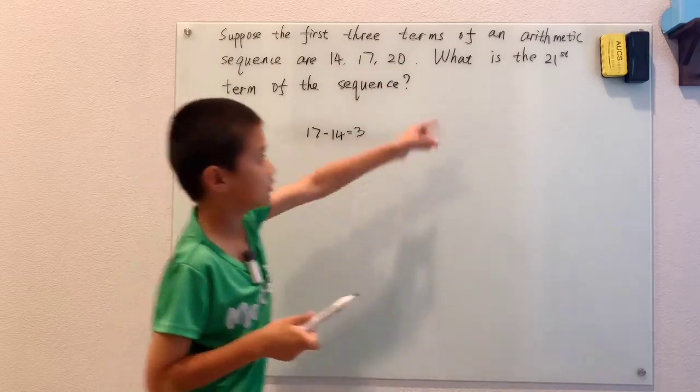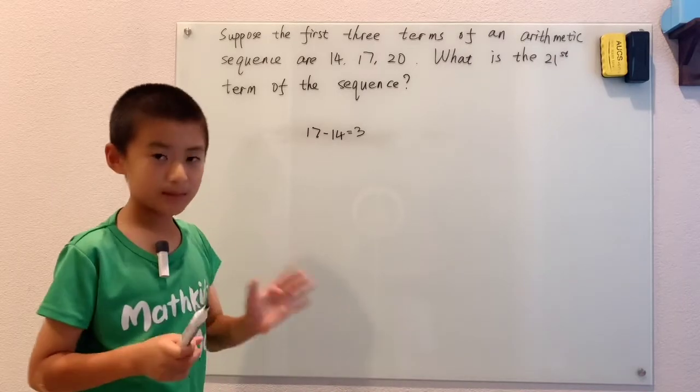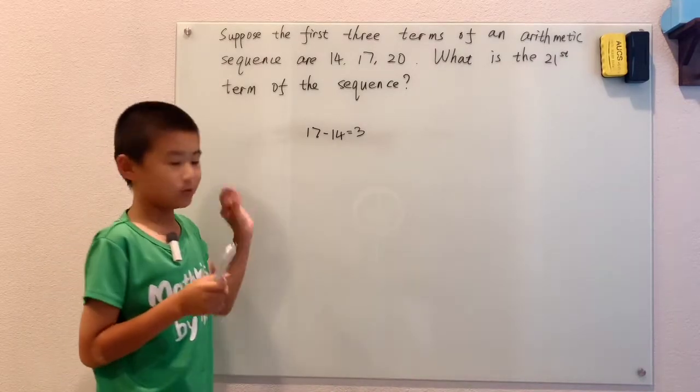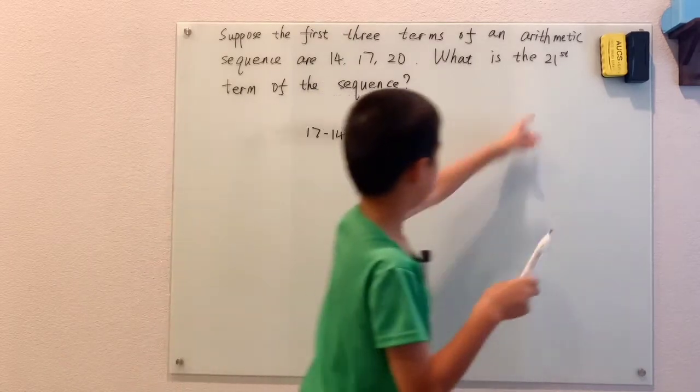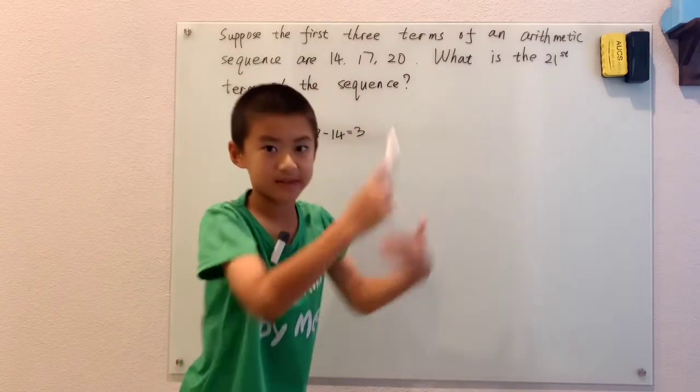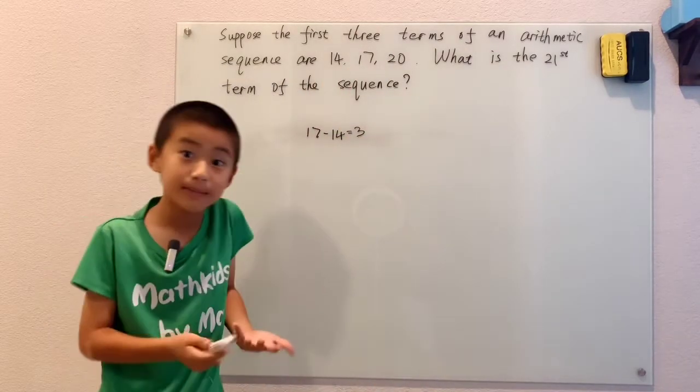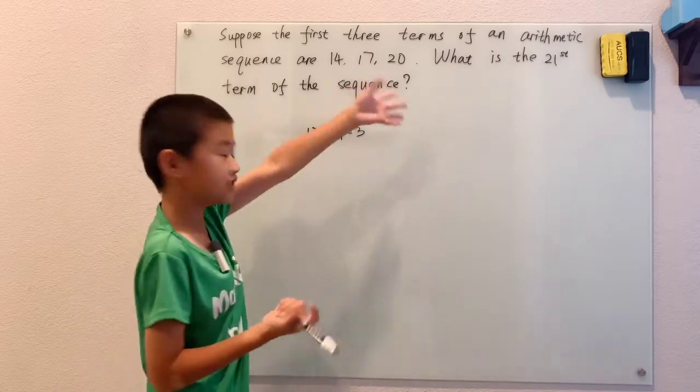So it looks like the 21st term, you would take 20 steps. Now remember, you've got to be careful. Don't be lazy. You still have to figure this out. Now you can't just say that, okay, you want the 21st term, so you take 21 steps to get to the 21st term. That may not make sense. But it doesn't if you think about what I just said.